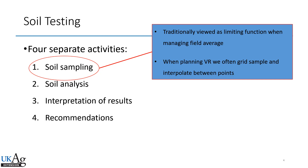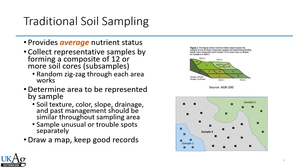When we talk about variable rate or precision ag, we often grid sample and interpolate between the points, which presents its own challenges. In traditional soil sampling, you're trying to provide the average nutrient status of a field or an area of a field. We recommend that you submit one sample that represents 10 or 20 acres. If your field is very variable, you'll want to submit more than one sample.